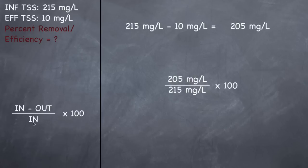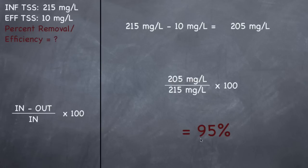So: 205 milligrams per liter divided by 215 milligrams per liter, all times 100, gives you 95 percent. What's coming into this plant — we're removing 95 percent of the TSS, which is great. Ultimately you'd want to remove 100 percent, but that's nearly impossible unless you have very advanced treatment systems.